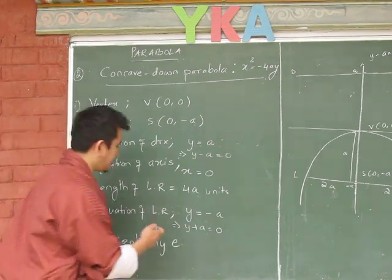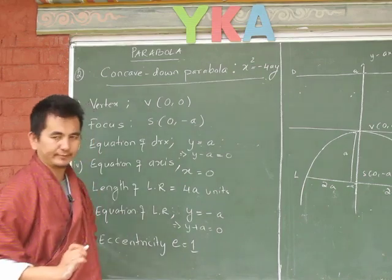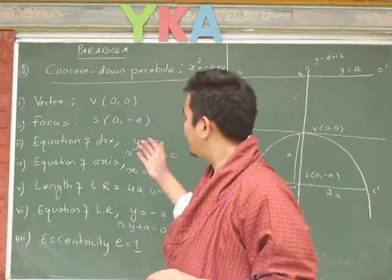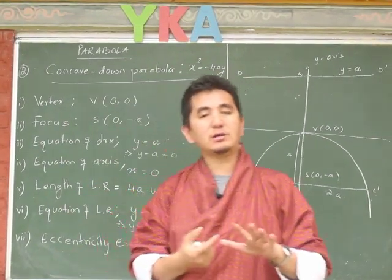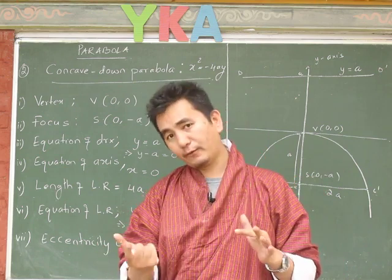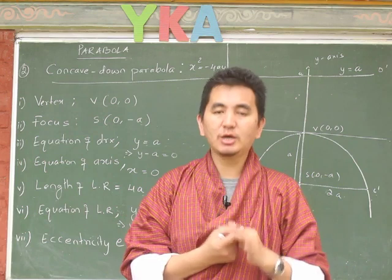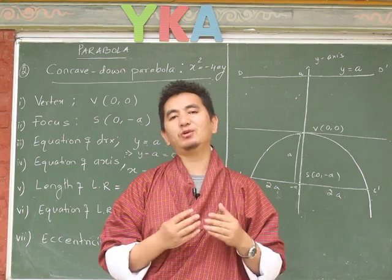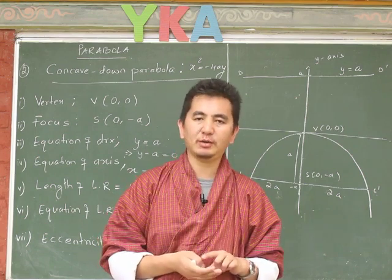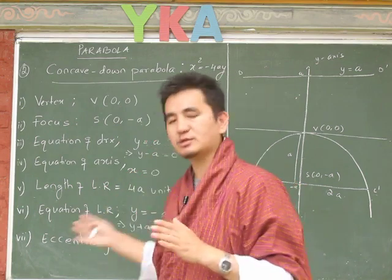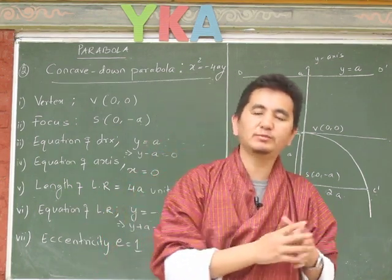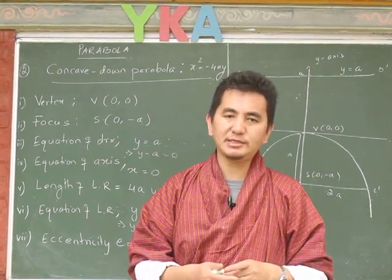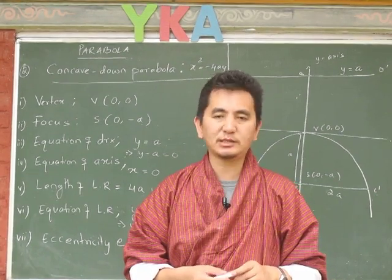The eccentricity for the concave down parabola is equal to 1. That completes the concave down parabola. Please solve concave left and concave up as an assignment. From the next video we will start solving problems on parabola. If you have understood all four parabolas clearly, solving problems will be straightforward. Thank you very much, see you in the next video lesson.